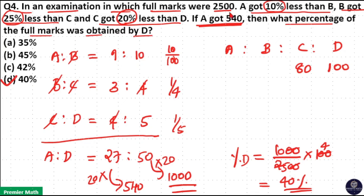Again, B got 25 percentage less than C. So 100 percentage is 80, 10 percentage is 8 and 5 percentage is 4. That means 25 percentage is 5 into 4, 20. So 20 less than C means 80 minus 20, 60. B got 60 marks.